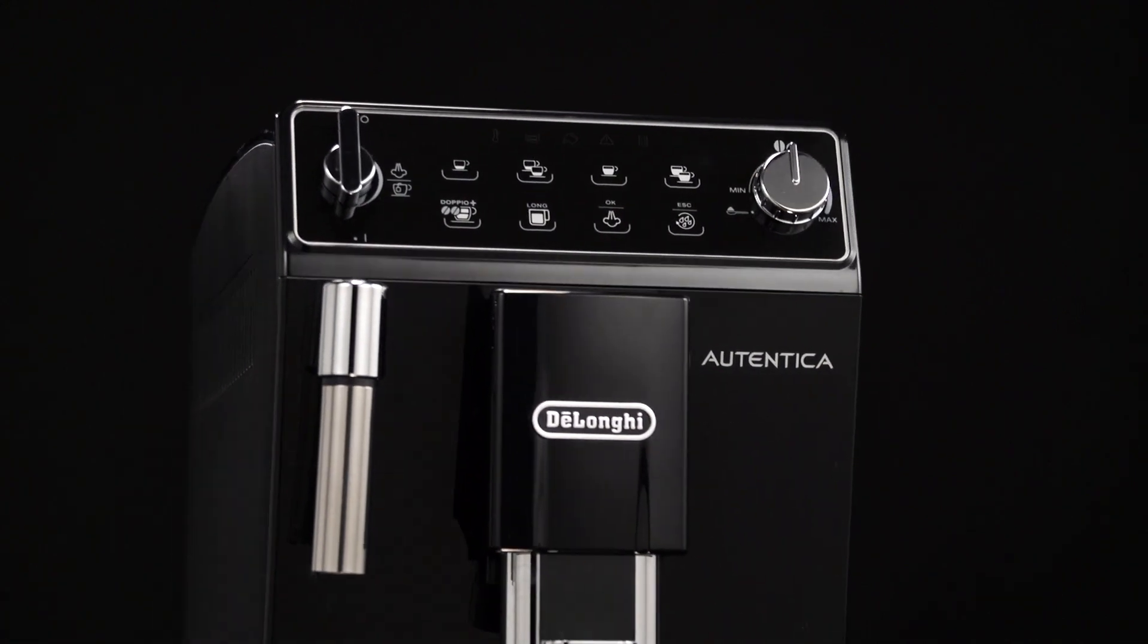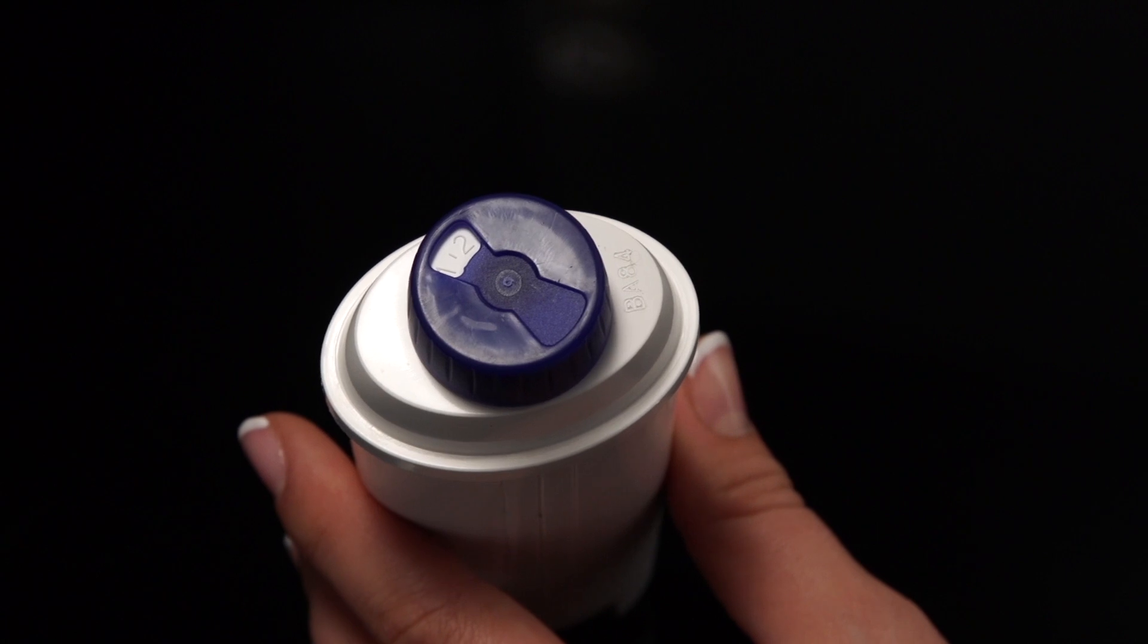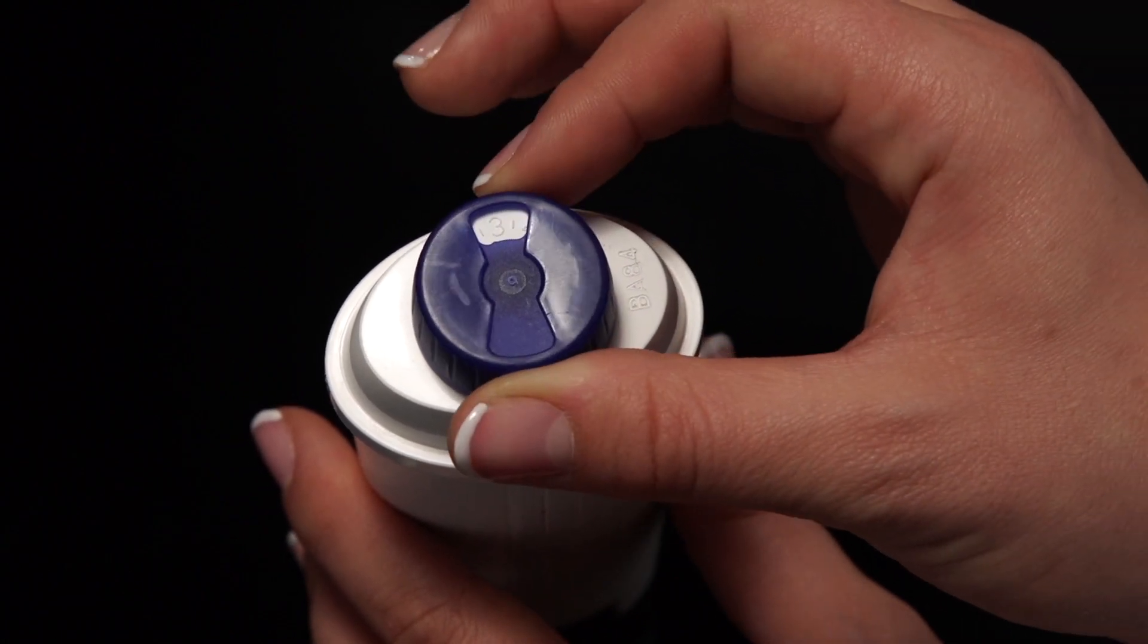Installing the Filter. Remove the filter from the packaging. Turn the date indicator disc until the next two months of use are displayed.